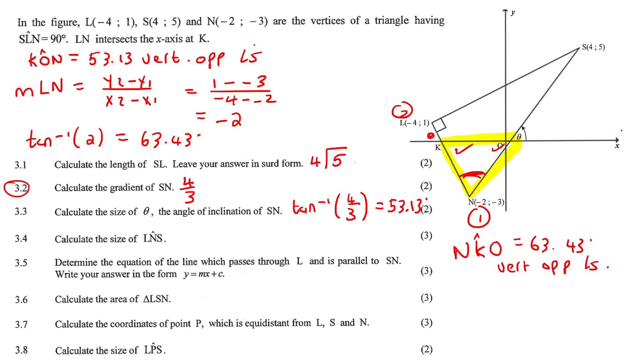So now we have this angle, and now we can see some of the angles in a triangle. So angle N, well, they called it LNS, let's rather do that, is going to be 180 minus 63.43 minus 53.13, and that is because of sum of angles in a triangle, and so that'll be 63.44 degrees, 63.44 degrees.